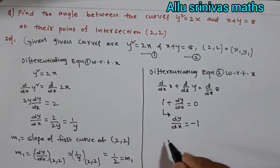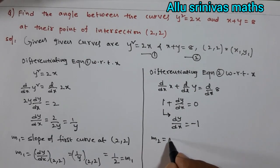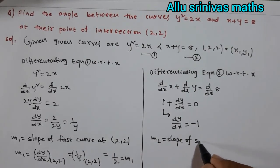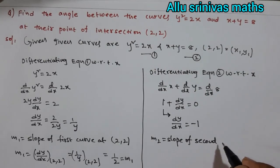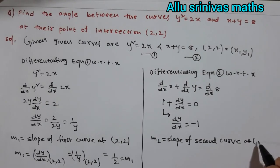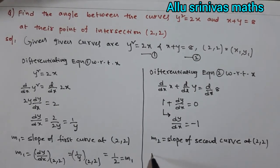So m₂ is slope of second curve at (2, 2). m₂ = dy/dx at (2, 2).